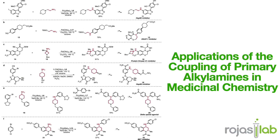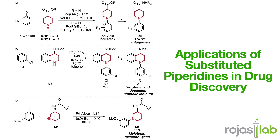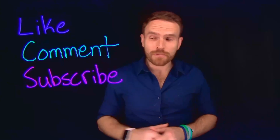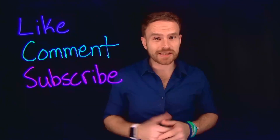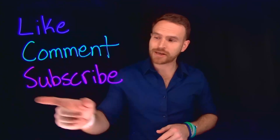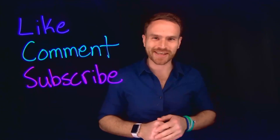To recap: the Buchwald-Hartwig amination enables efficient carbon-to-nitrogen bond formation; a palladium catalyst drives the reaction via a three-step cycle; Buchwald ligands enhanced efficiency and selectivity; and Hartwig's work expanded the mechanism and broadened applications. Understanding this reaction is key to mastering modern cross-coupling chemistry. If you enjoyed this video, make sure to give it a thumbs up, comment if you have any questions related to palladium-catalyzed cross-coupling, and subscribe so you never miss another video.